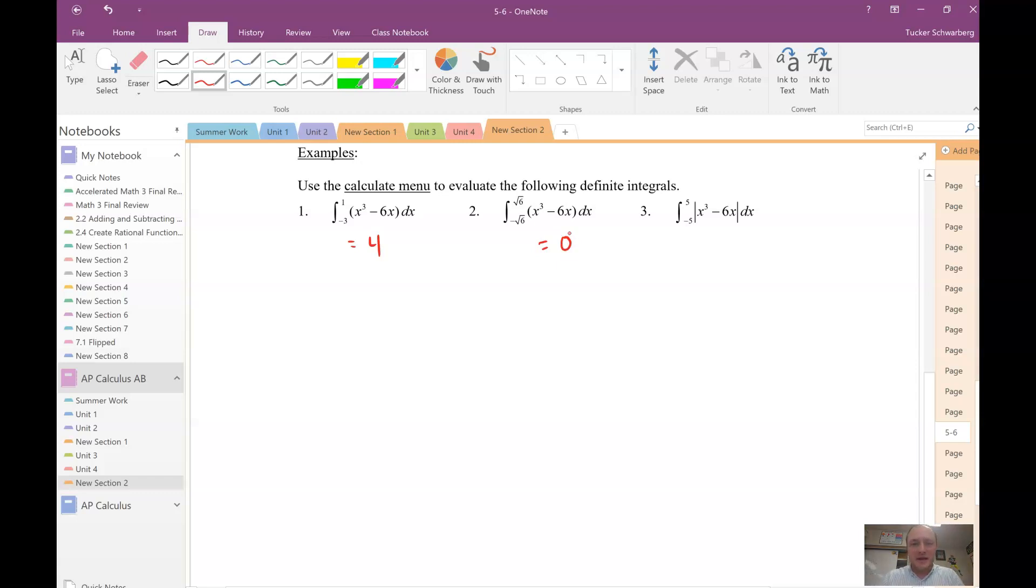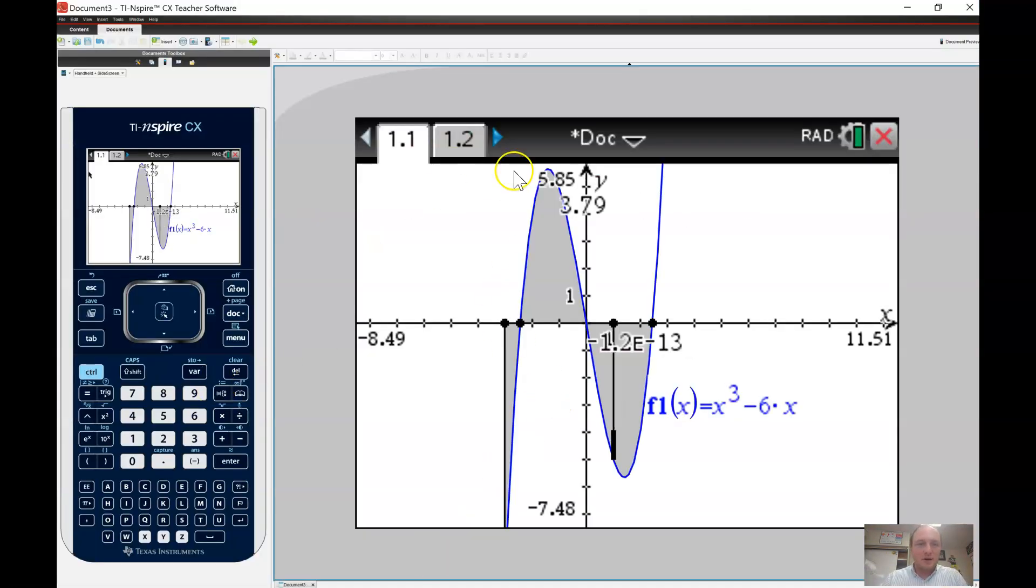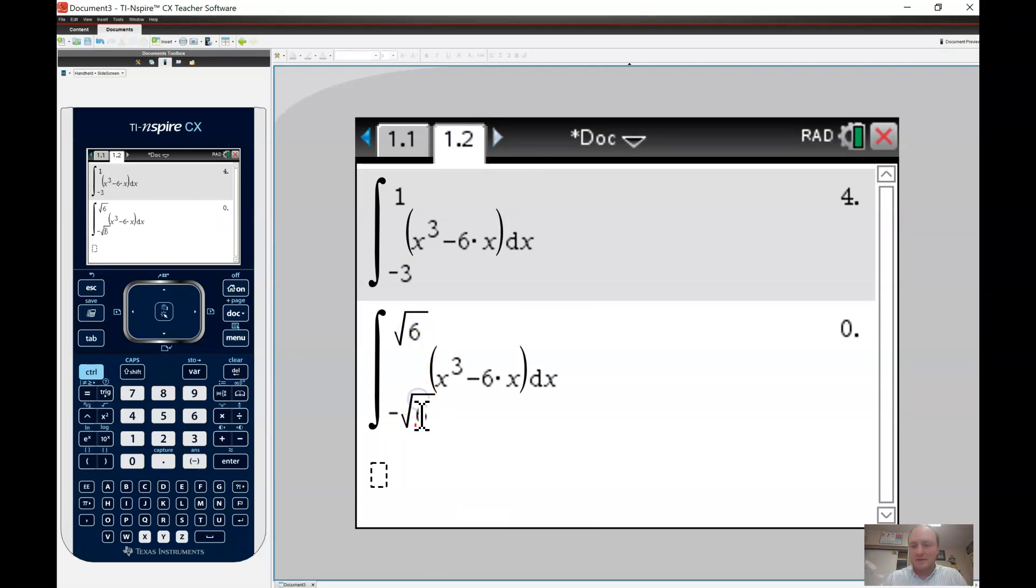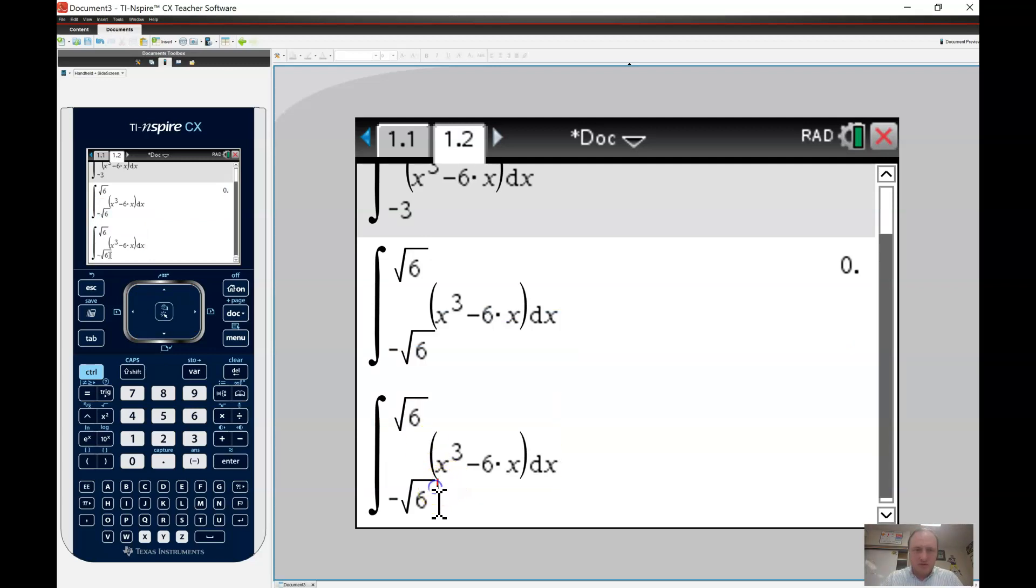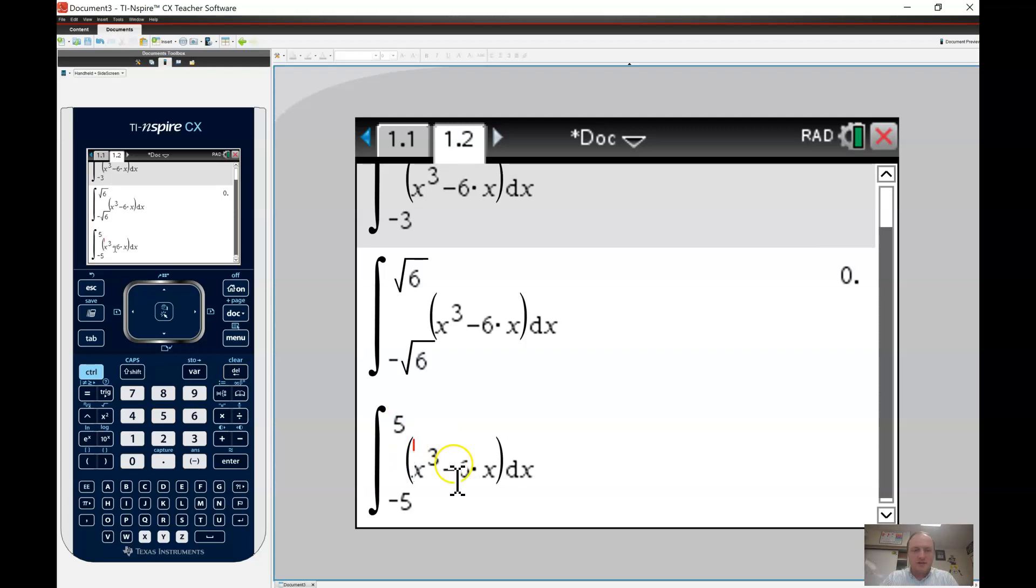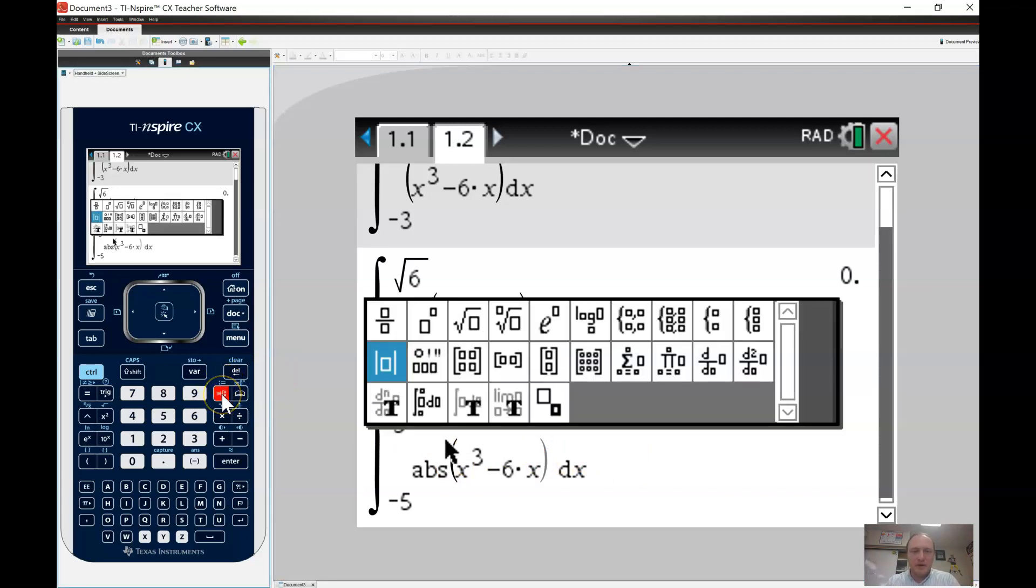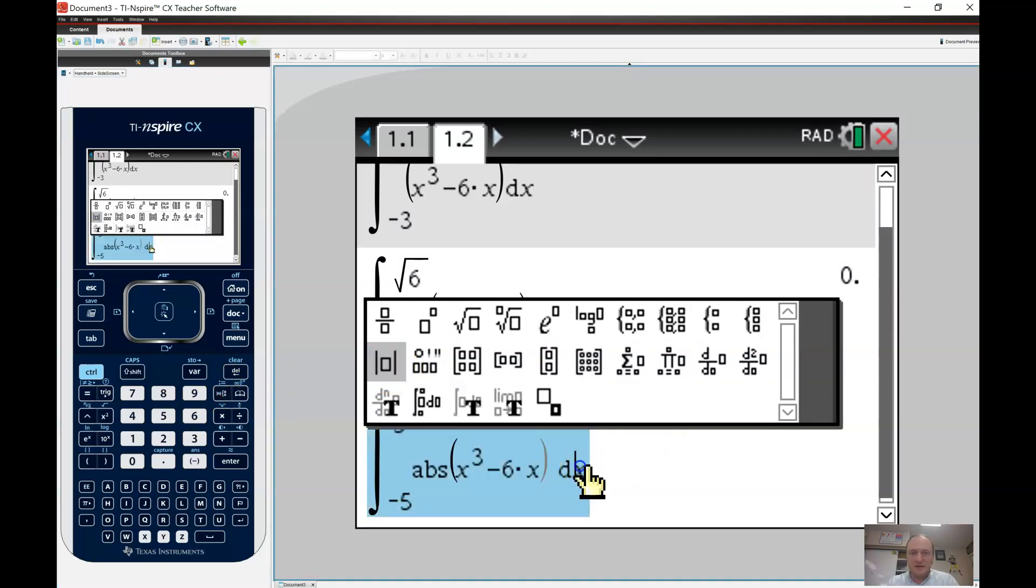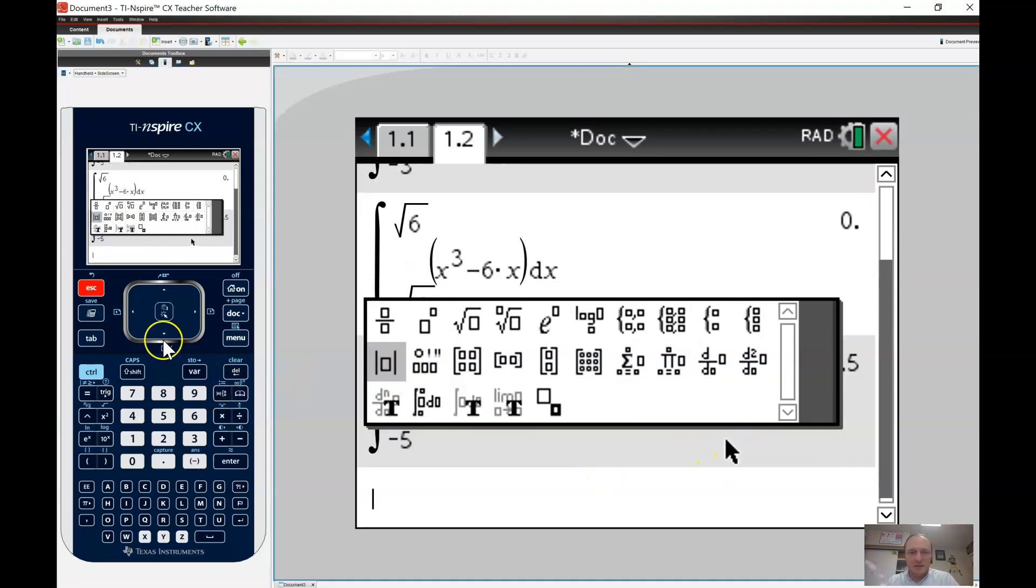All right, now I'm going to go ahead and integrate our function from negative 5 to 5. Okay, so from negative 5 to 5, and I don't want just this. I want the absolute value. So a couple ways you can do absolute value. You can type in abs parentheses, and it will take the absolute value of that area.